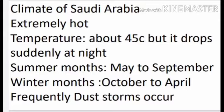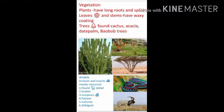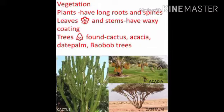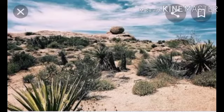Next, we move to the vegetation of Saudi Arabia. Very few plants grow here. Cacti and some short shrubs which can withstand the hot and dry conditions can be seen growing in this desert region. Plants have long roots and spines. Leaves and stems have a waxy coating to prevent the loss of water. Some common trees found here are cactus, date palm, and baobab trees.